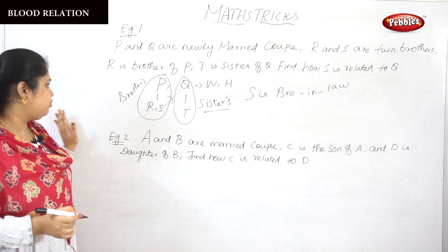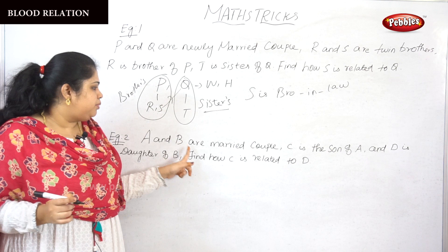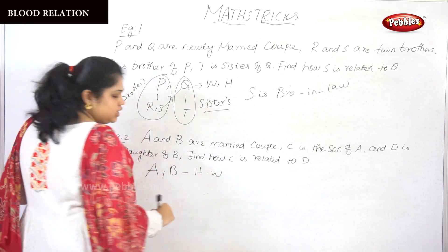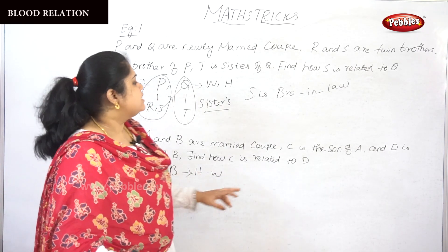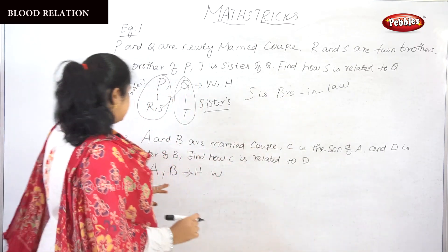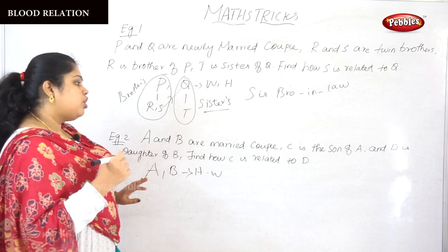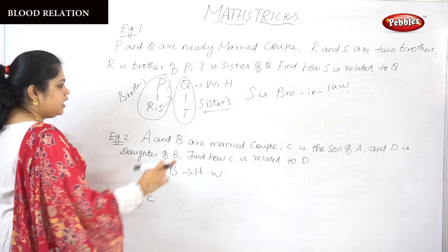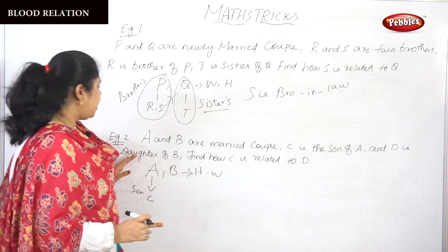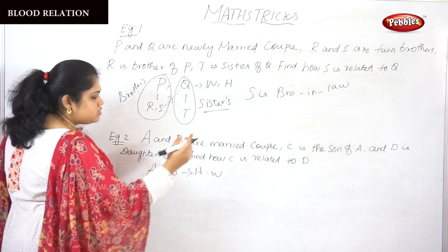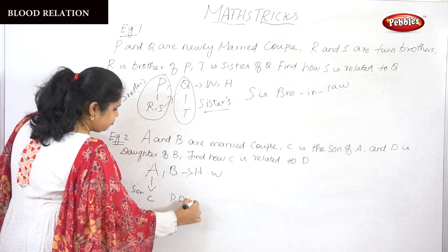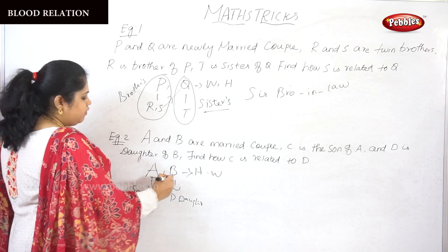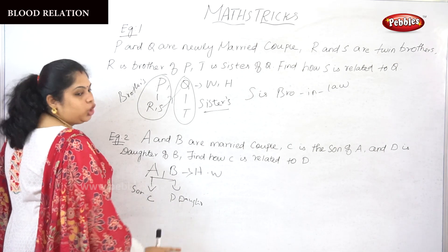Let's see the second question. A and B are a married couple, so A and B are husband and wife. C is the son of A, so A's son is C. D is daughter of B, so B's daughter is D. This means A and B together have a son C and a daughter D.